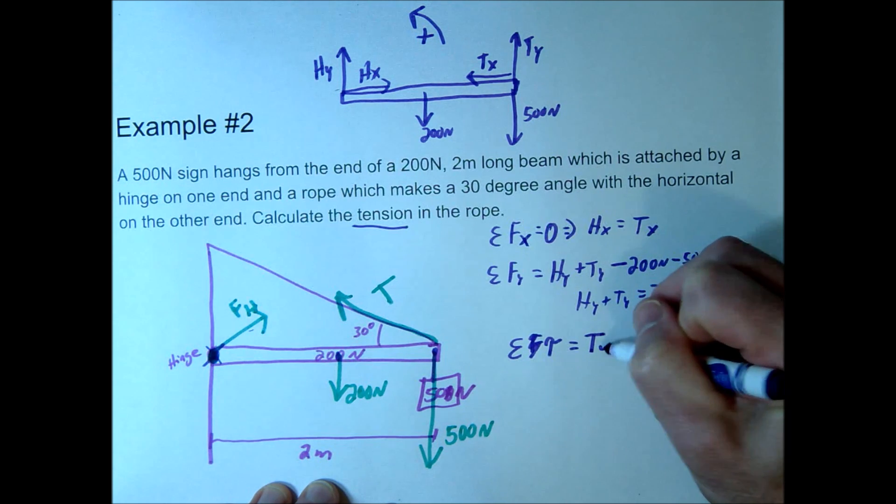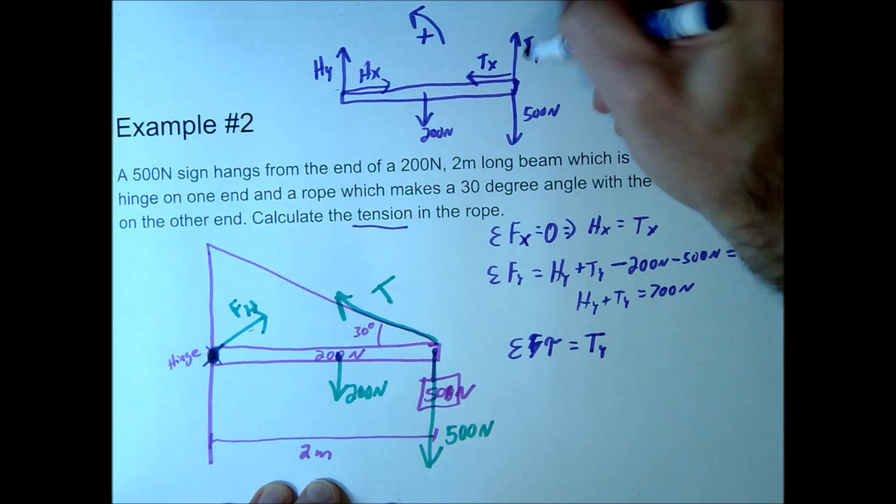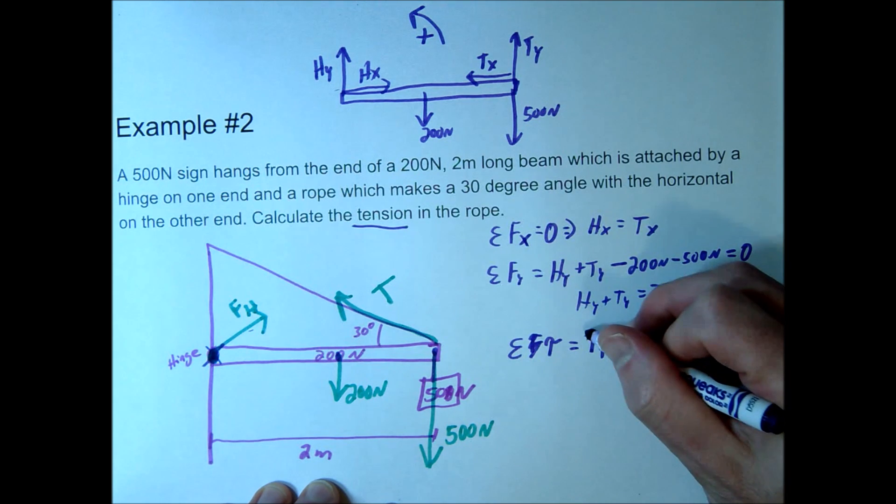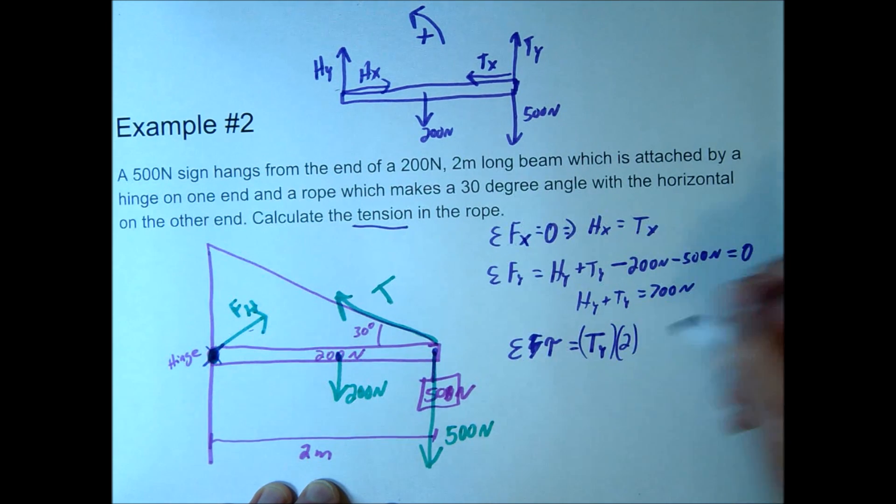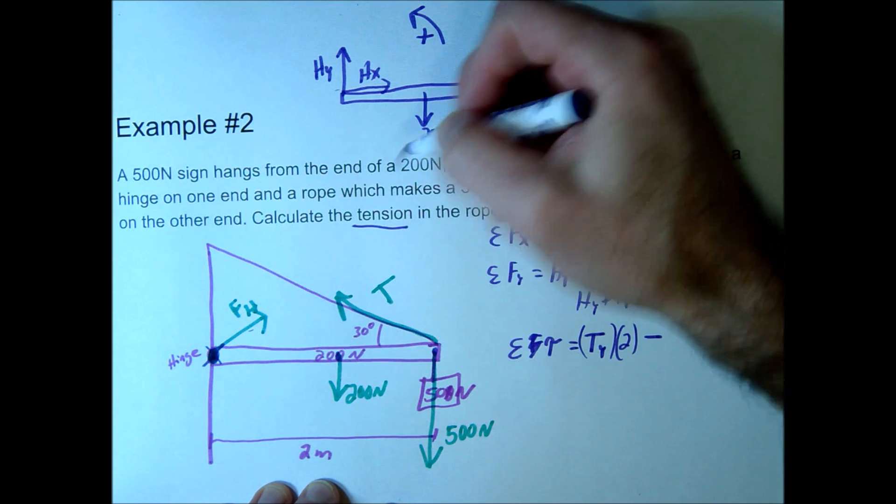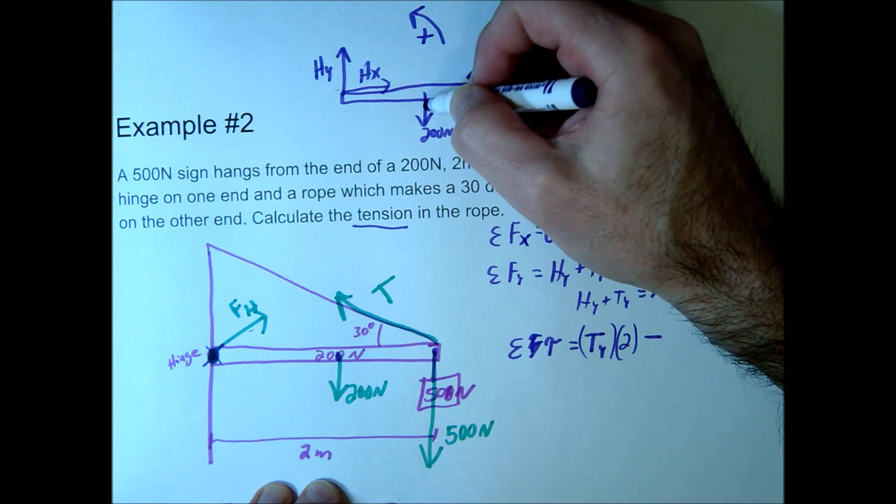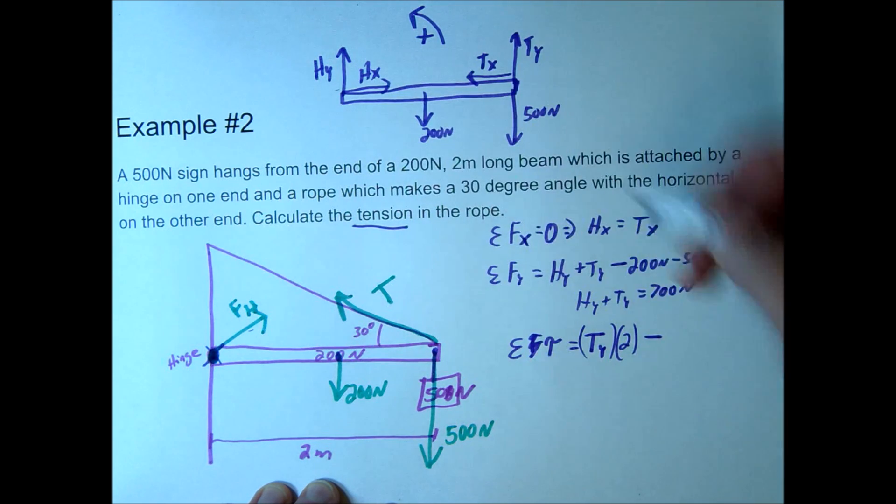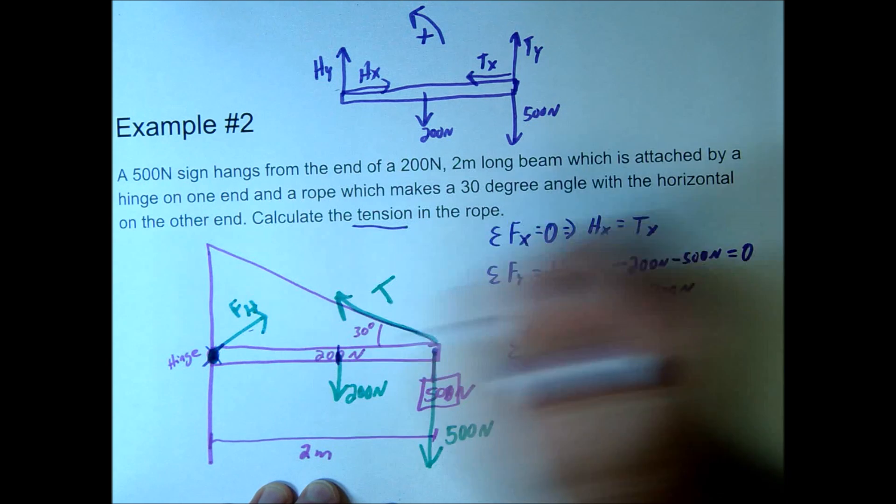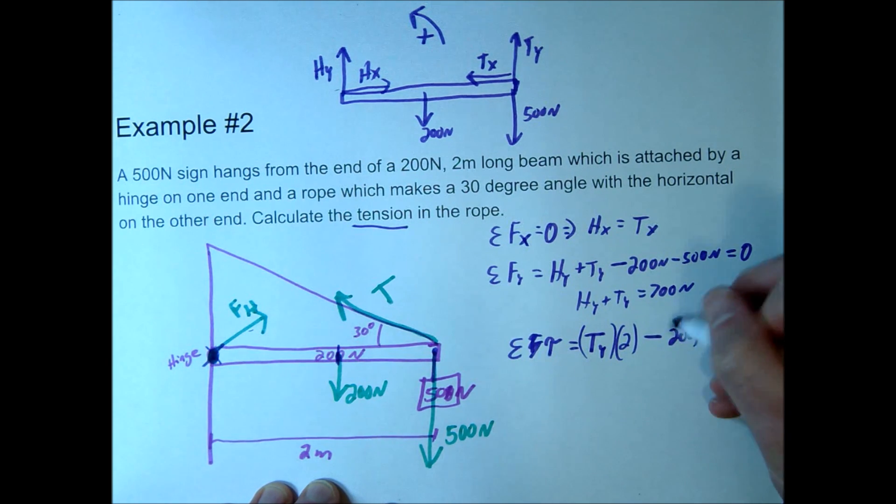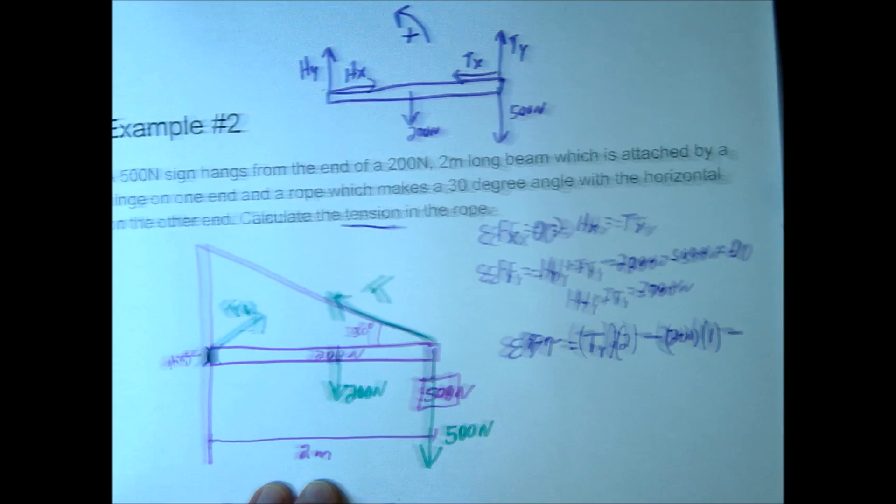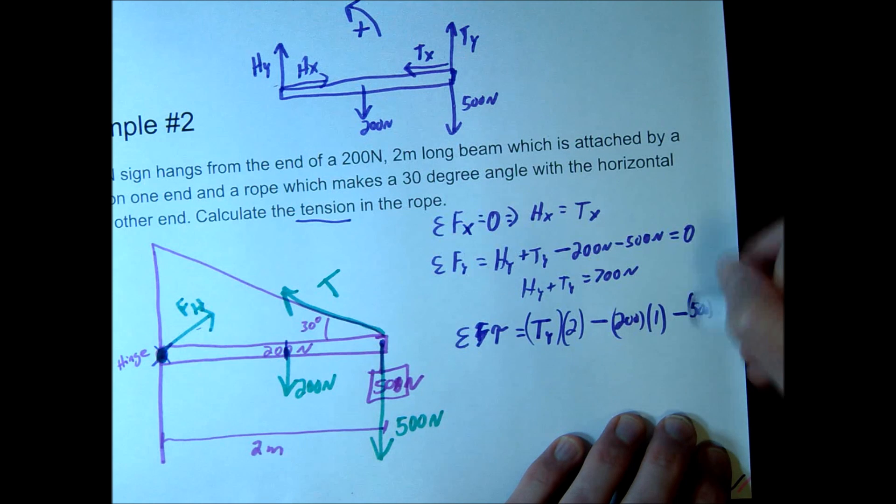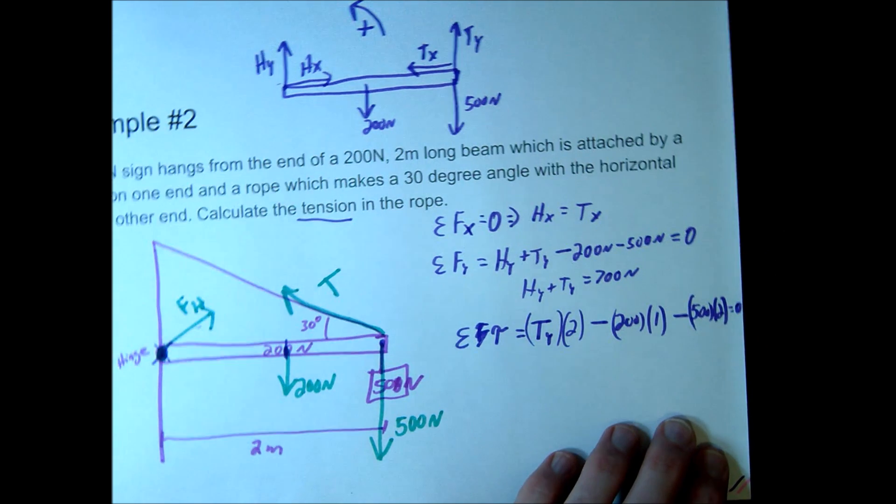So for this problem I'm going to choose that to be positive, so we'll go ty, since that's going counterclockwise up this way, that's going to be positive. So ty times this length, which was 2 meters, and then we'll make our clockwise negative, clockwise torques. So this one would be 200 clockwise times 1 meter, right, it's halfway, so this is 2, this should be 1, so it's going to be 200 times 1, minus, and this one is going to be 500 times this length which is 2 meters, so it's going to be 500 times 2, and then again that should be equal to 0.